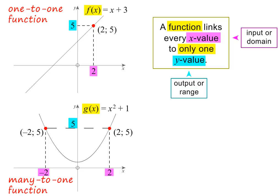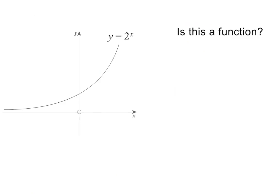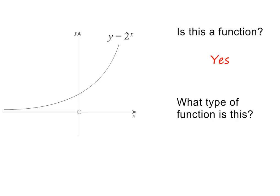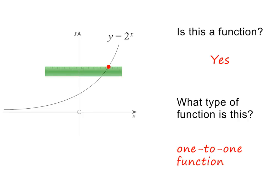Please pause the lesson if you need more time to look at all of this. Let's do a few examples together. We are given the exponential graph y equals 2 to the power of x. Is it a function? To check, let's use the vertical line test. Moving the ruler across the graph from left to right, it will only ever cut the graph once. So yes, it is a function. Next we are asked what type of function it is. To answer this, we need to use the horizontal line test. Moving the ruler from top to bottom, it will only ever cut the graph once. This means that it is a one-to-one function. Please pause the lesson if you need to.